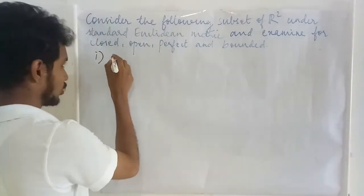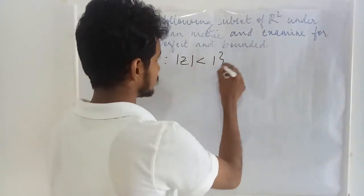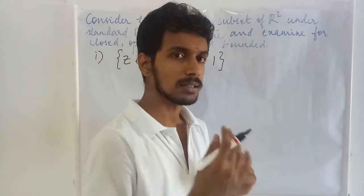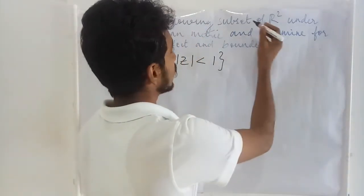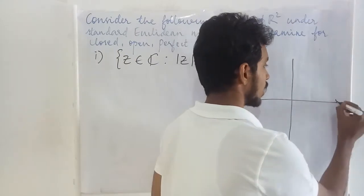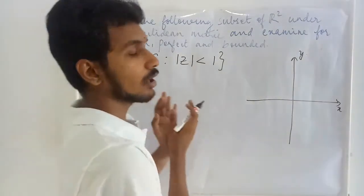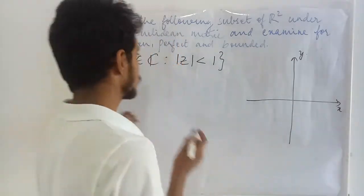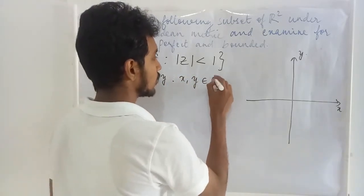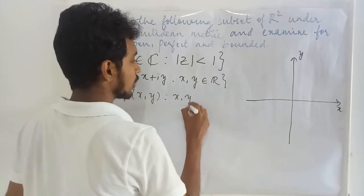The first set we are going to consider is the set of all complex numbers such that the absolute value of z is less than 1. We need to think about what exactly this set is. We are collecting a subset of R², meaning we are working on a plane, but the given set is in complex numbers. Every complex number takes the form x + iy, where x and y are real values. Instead of writing it in this form, we may represent this as the ordered pair (x, y) where x and y are real values.